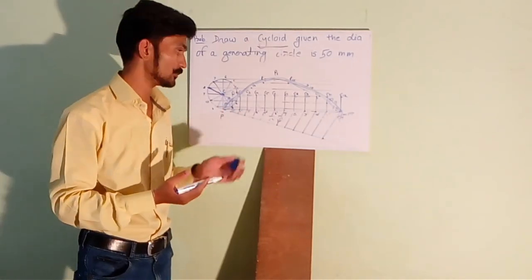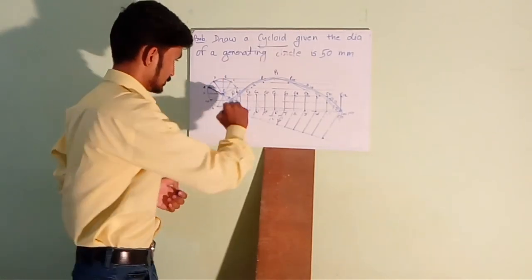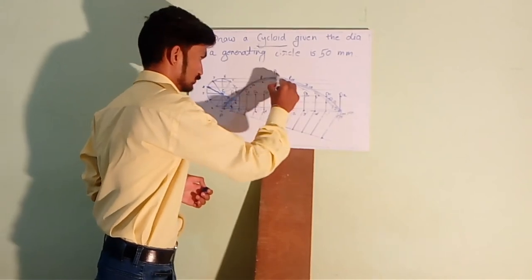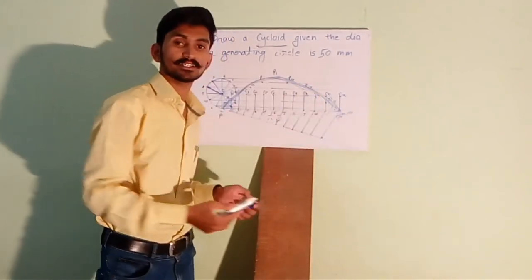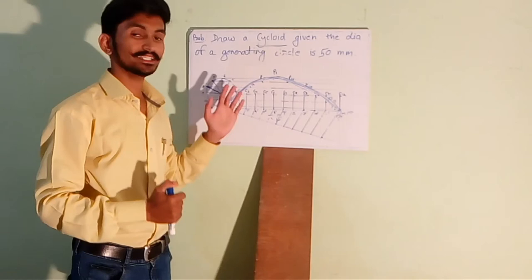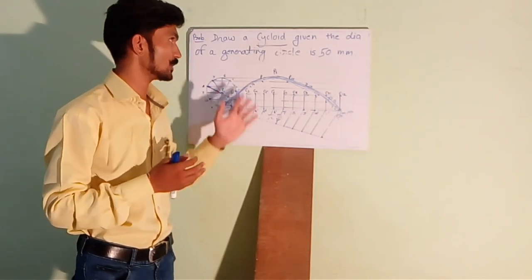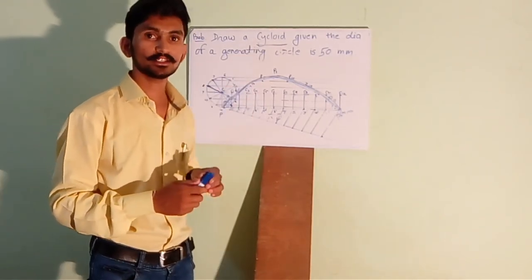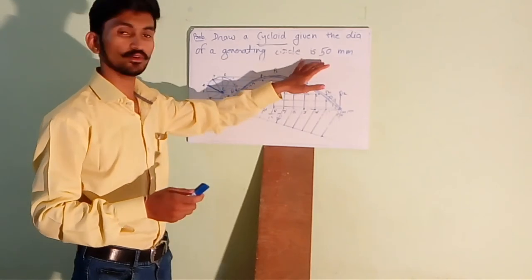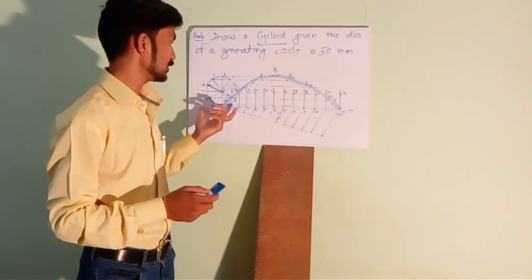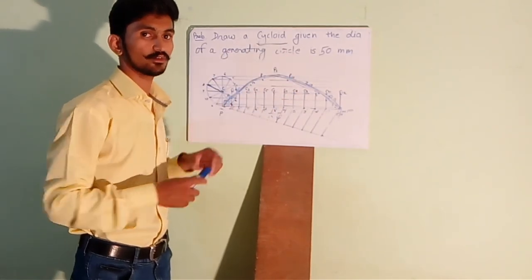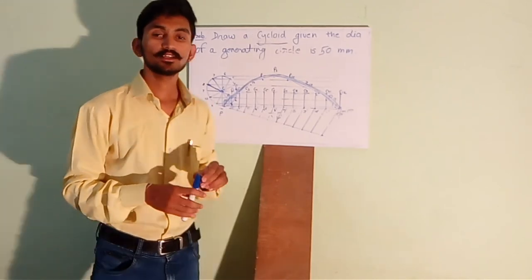Okay, you have to draw it very accurately on your drawing sheet as it is on the whiteboard. It is not accurate. So, this is how you can draw a cycloid using this method in which you require only one data, which is the radius or the diameter of the generating circle.